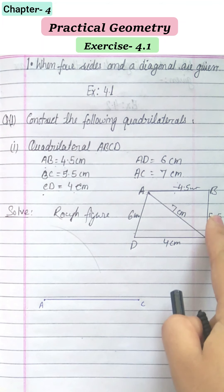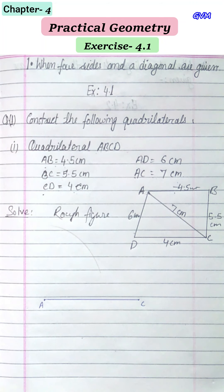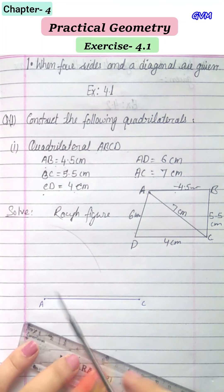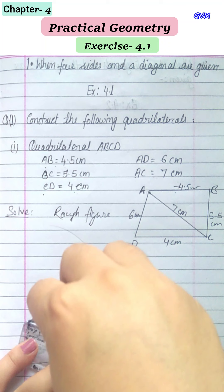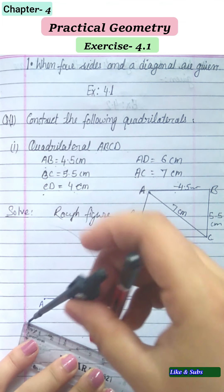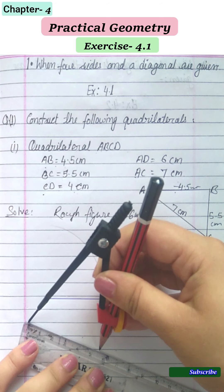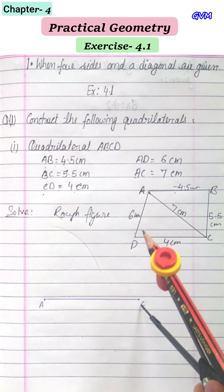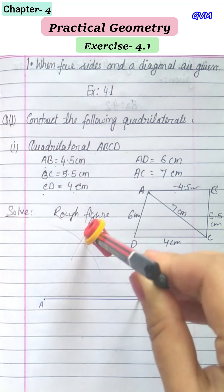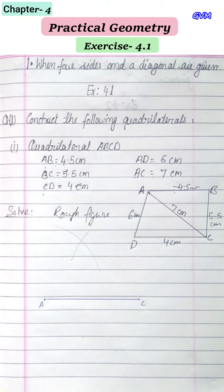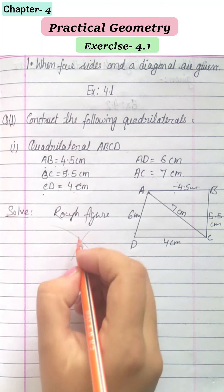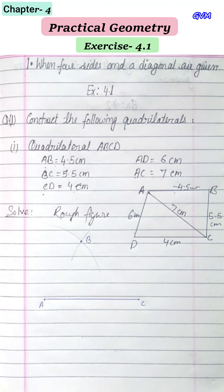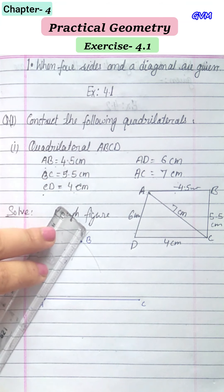From C, draw an arc of 5.5 cm. Take the ruler and compass, put the needle at zero, and measure 5.5 cm. Put the needle at C and draw the arc. Where these two arcs intersect is point B.